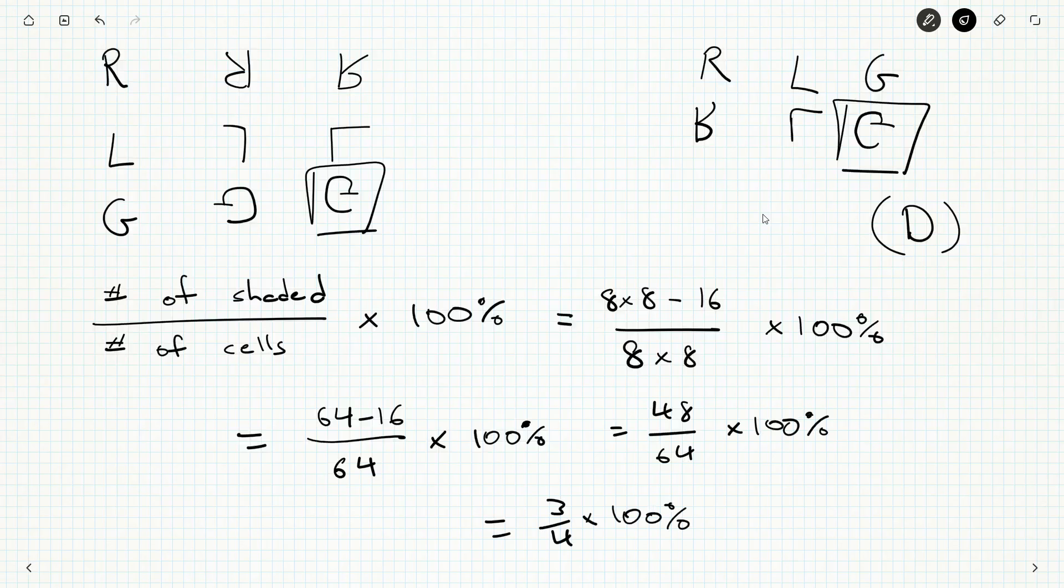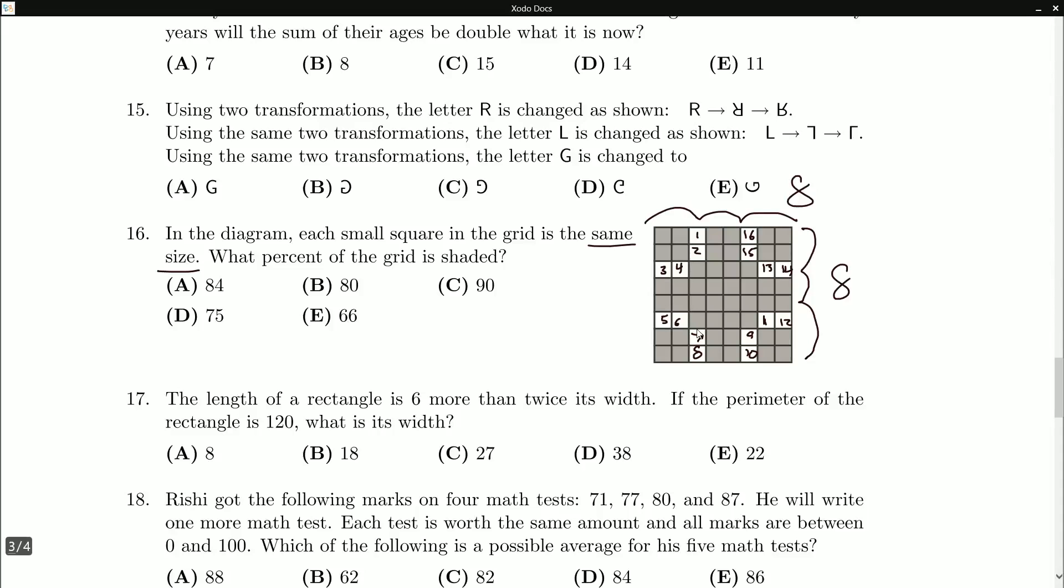A hundred divided by four, what's a quarter of a hundred? It's 25, 25 times three, 75. So we get 75%. That's going to be our final answer. And that is D.